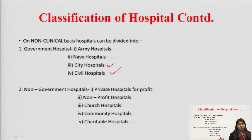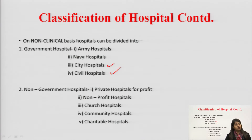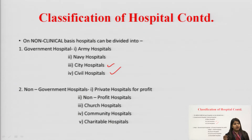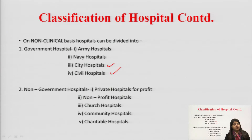There are also church hospitals — hospitals associated with religious institutions such as churches, temples, and mosques. Then we have community hospitals, which are private hospitals present in a community, and charitable hospitals, which give whatever profit they have gained to some charity. These are the non-government hospital categories.